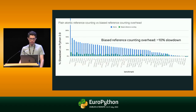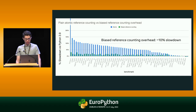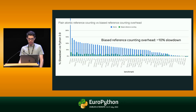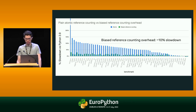Here's an updated chart comparing atomic reference counting overhead in blue versus biased reference counting in green. The overhead of biased reference counting is much less than atomic reference counting. Using Python 3.9 as a base, biased reference counting is about 10% slower on average across the PyPerformance benchmarks, compared to that 60% slowdown with atomic reference counting.